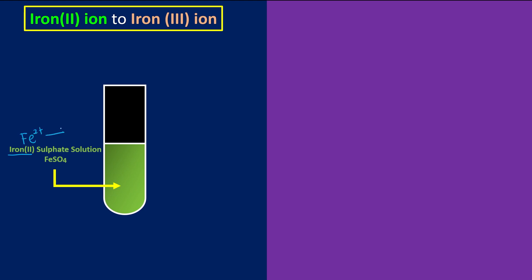And we know in order to form iron(III) ions, we need to lose one of the electrons. So losing electrons is oxidation, so of course we need to have an oxidizing agent. So for today, I'm going to use bromine water as my oxidizing agent. Of course, you can use any other oxidizing agent that we learned before.